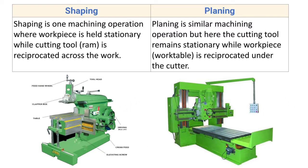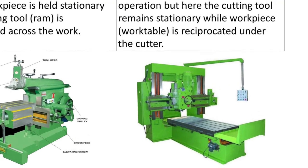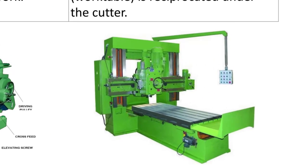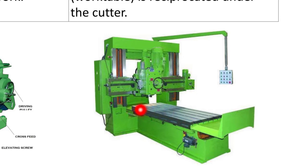In the planing machine, planing is a similar machining operation but here the cutting tool remains stationary while the workpiece is reciprocated under the cutter. The table of the planer machine holds the workpiece and the tool post holds the cutting tool. The major difference is that in the planer, reciprocating motion is given to the workpiece — the table reciprocates — whereas in the shaper machine, the cutting tool reciprocates.